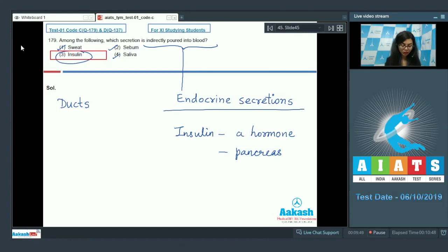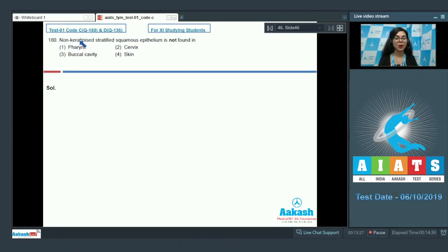The correct answer is insulin, that is option number three. Question number 180: non-keratinized stratified squamous epithelium is not found in pharynx, cervix, buccal cavity, or skin. Students, the presence of keratin on an epithelium makes it rough, dry, which aids in protection. The internal structures of our body do not need such kind of protection. So pharynx, buccal cavity, cervix, which are internal structures, do not need a keratinized epithelium. Thus the epithelium found in pharynx, buccal cavity, or oral mucosa, or cervix would be non-keratinized.